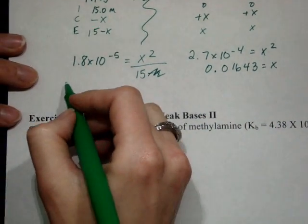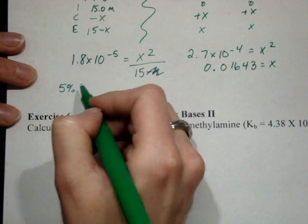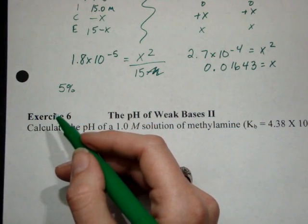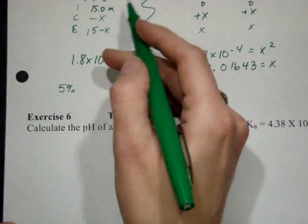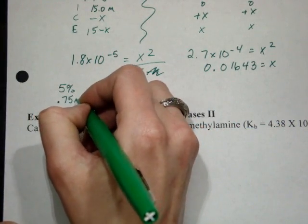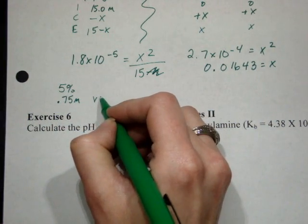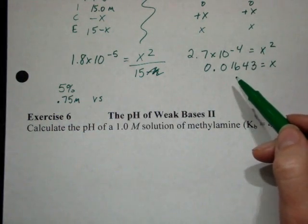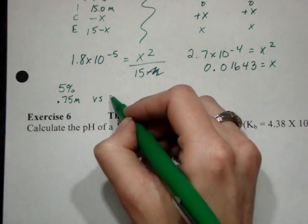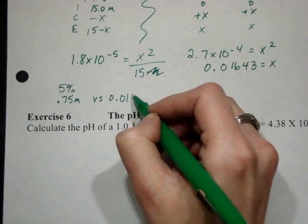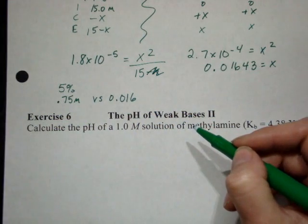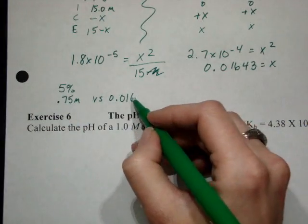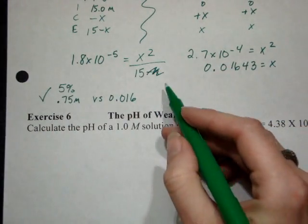I need to check my 5%. 0.05 times 15, again based on my original concentration, is 0.75 molar. All righty. Hydroxide is 0.0, or my X value is 0.016, which is mighty tiny. Okay, so that definitely can work out just fine.